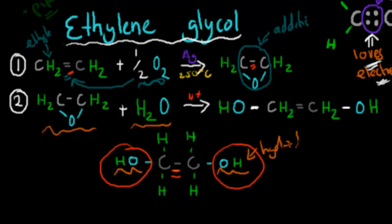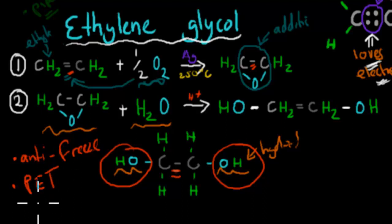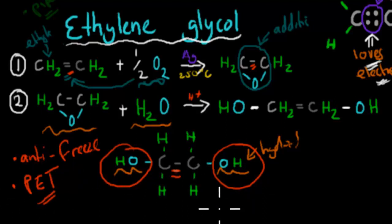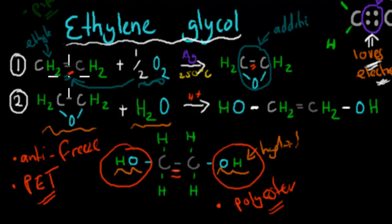Ethylene glycol is quite often used to make antifreeze, to prevent freezing, as the name would suggest. It's also used to make PET — basically all of your plastic bottles, many of them are made out of PET, which is a very widely used plastic. And from this we can also make polyester, which is obviously used to make clothing. These are some of the products that we can make from ethylene glycol, and the reason why we can make it is because of the higher activity of the double bond.